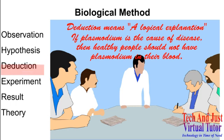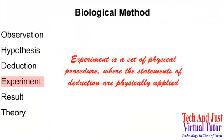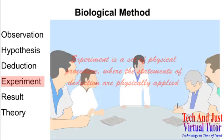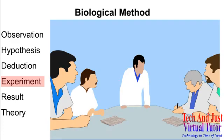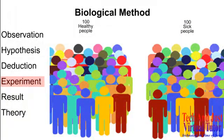Now, after the deduction comes experiment. Experiment is a set of physical procedure where the statements of deduction are physically applied. Now, having said that, the medical team decided that they would conduct a survey and check the blood samples of 100 sick people as well as 100 healthy people.